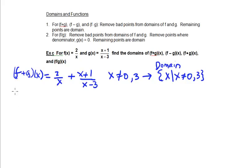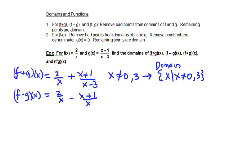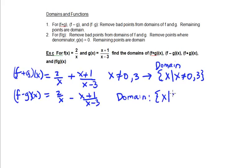For the subtracted and multiplied functions, we get the same bad points. For f minus g of x we get 2 divided by x minus x plus 1 over x minus 3. We can say that the domain forces us to eliminate the bad points, so our domain is again the set of all x's except the bad ones — x is not equal to 0 or positive 3.